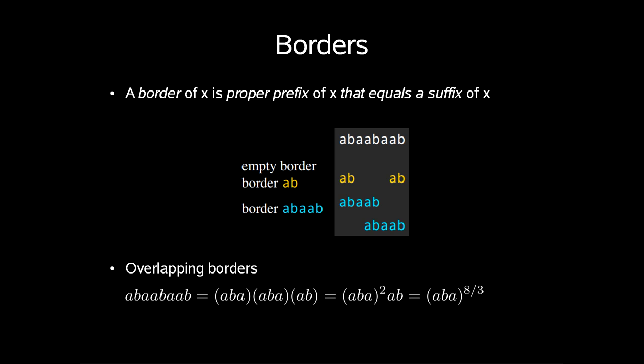Note that the overlapping borders of a string imply that the string is periodic, meaning that the string a b a a b a b can be broken down to a b a a b a a b, which is two repetitions of a b a followed by a b, which is roughly a b a to the power of 8 thirds.